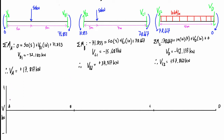On the very left-hand side of span AB, the shear VA is positive 17.817 kN. Moving to the other end of that span, the shear is negative 32.183 kN. When drawing shear force diagrams, as long as there's no distributed load or point load, the shear remains constant in that region — so from VA until we hit the point load five meters across the span, the shear stays constant, and same on the other side.